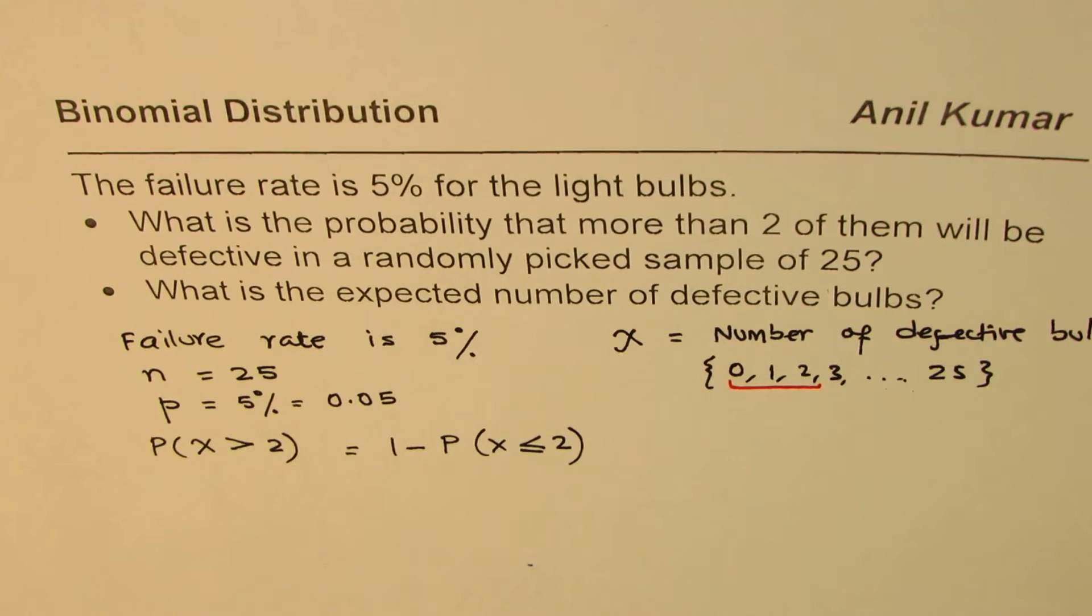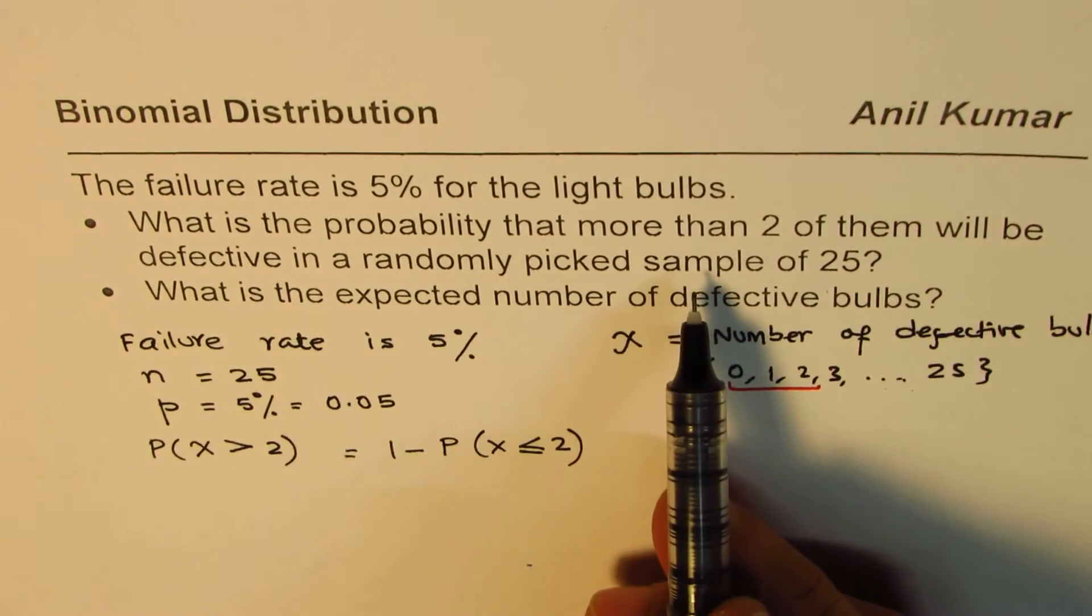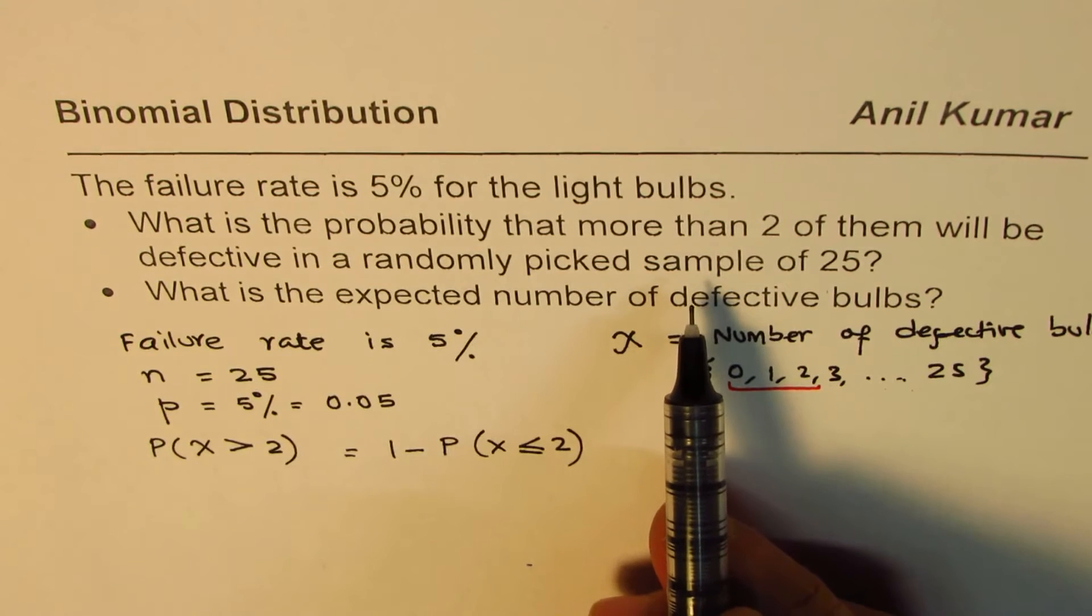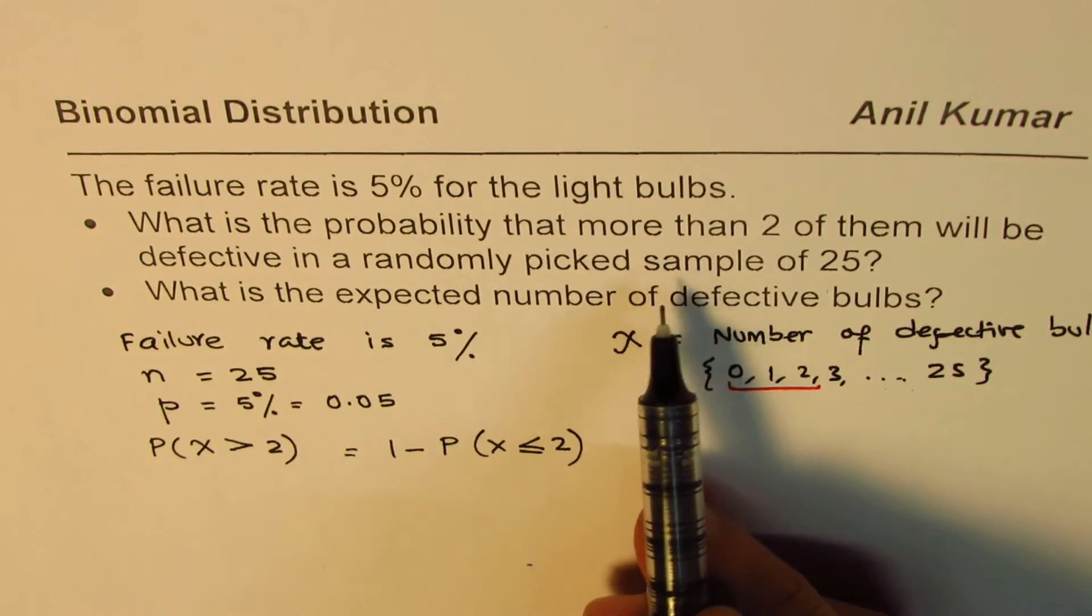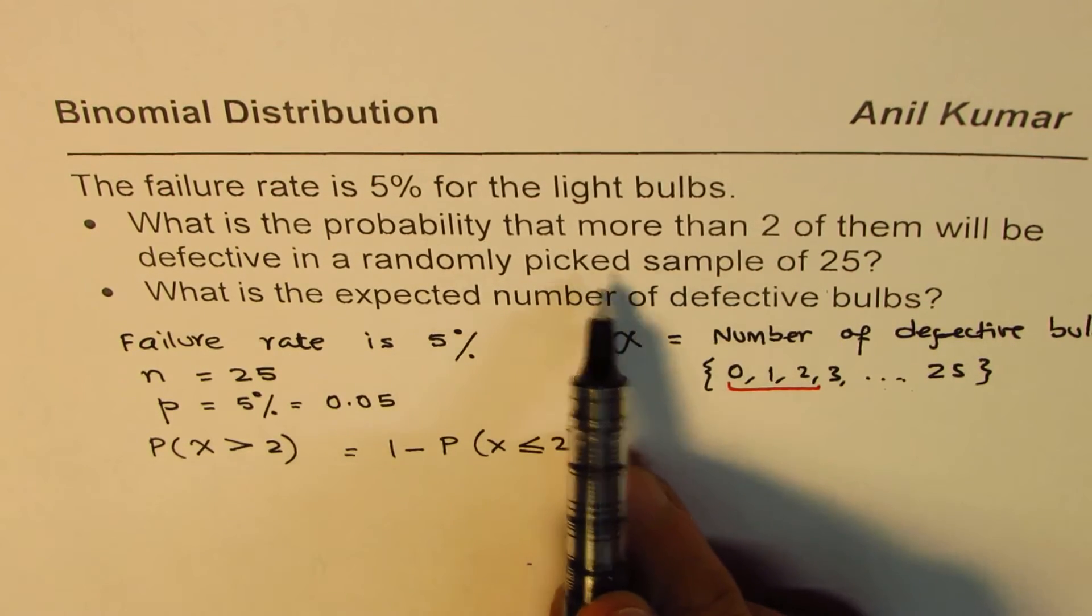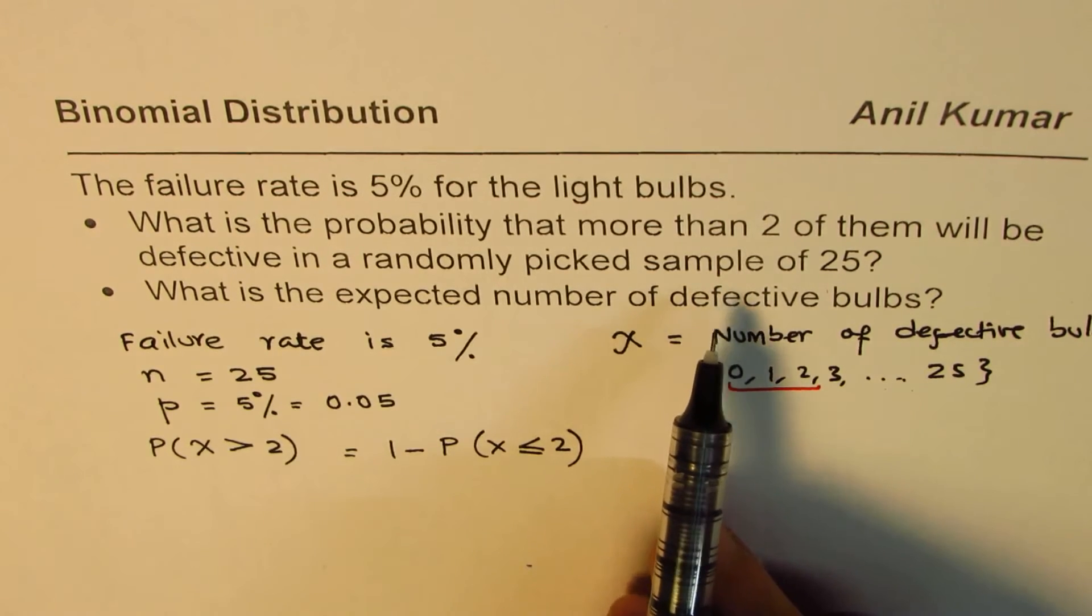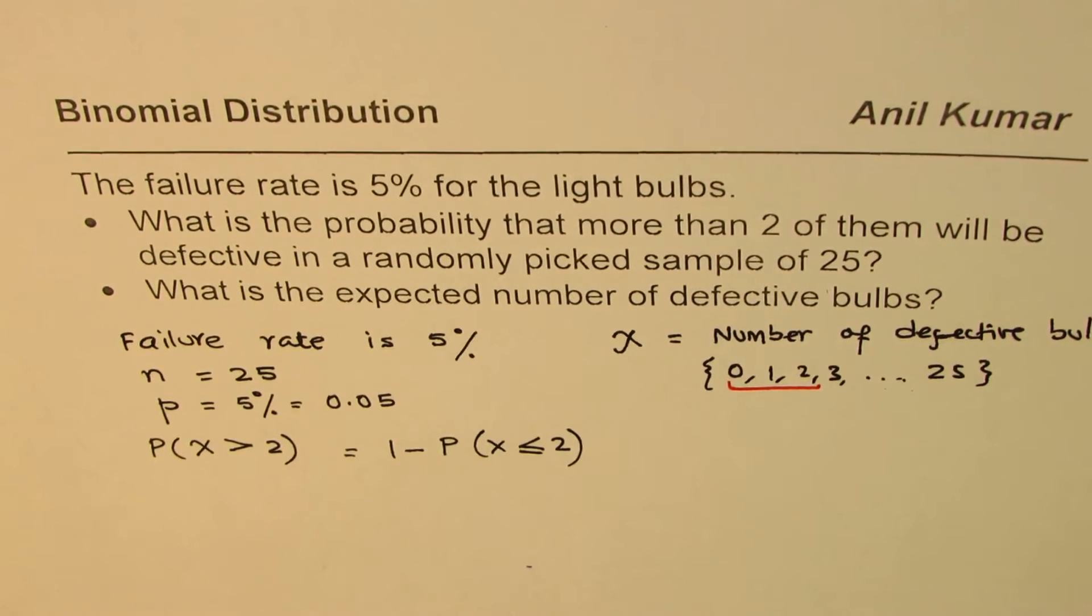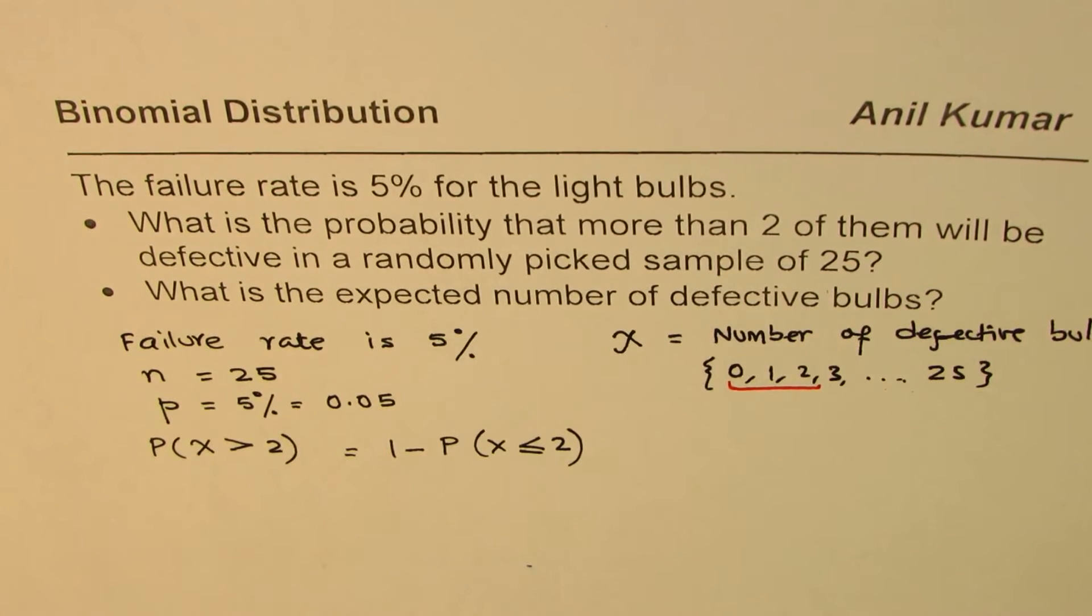If you pick a bulb, there are only two possibilities: it could be defective or not defective. Since this is a random pick, we are talking about Bernoulli trials, and therefore we can apply binomial distribution rules to find our answers.